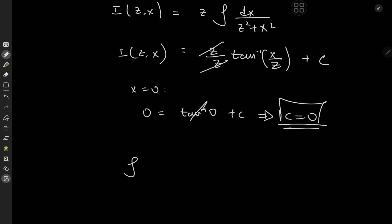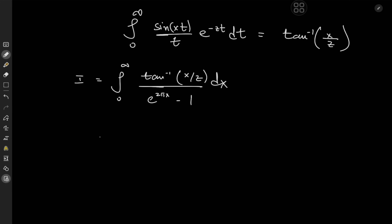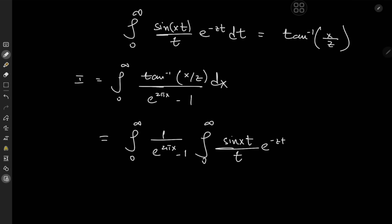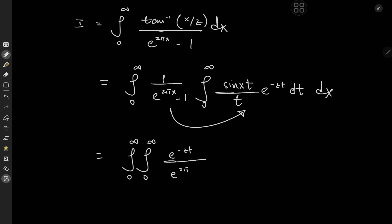So the integral from 0 to infinity of sin(xt) / t times e^(−zt) dt equals arctan(x/z). We have this exact term in the numerator of our target integrand, so the plan is to express the target as a double integral: the integral from 0 to infinity of 1/(e^(2πx) − 1) times the integral from 0 to infinity of sin(xt)/t times e^(−zt) dt, with the outer integration with respect to x. Taking e^(−zt)/(e^(2πx) − 1) inside, we get the double integral from 0 to infinity of e^(−zt)/(e^(2πx) − 1) times sin(xt)/t dt dx.